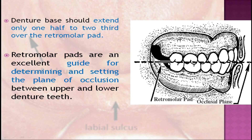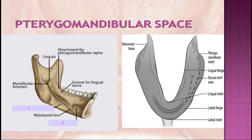These muscles limit denture extent and prevent the placement of extra pressure during impression making. Hence, the denture base should extend only one-half to two-thirds over the retromolar pad. Retromolar pads are an excellent guide for determining and setting the plane of occlusion between the upper and lower dentures. If the impression extends onto the ramus, the buccinator muscle and adjacent tissues will be compressed between the hard denture border and the sharp oblique ridges, causing soreness and limiting the function of the buccinator muscle.